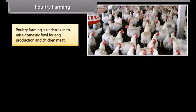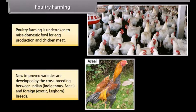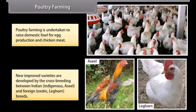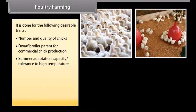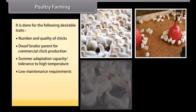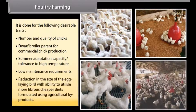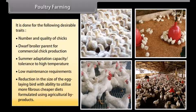Poultry farming is undertaken to raise domestic fowl for egg production and chicken meat. New improved varieties are developed by cross-breeding between Indian indigenous breeds such as Aseel and foreign exotic breeds such as Leghorn. This is done for desirable traits including: number and quality of chicks; dwarf broiler parent for commercial chick production; summer adaptation capacity and tolerance to high temperature; low maintenance requirements; and ability to utilize more fibrous, cheaper diets formulated using agricultural byproducts.